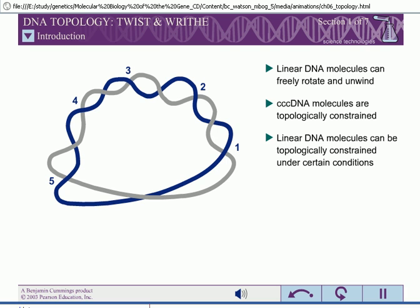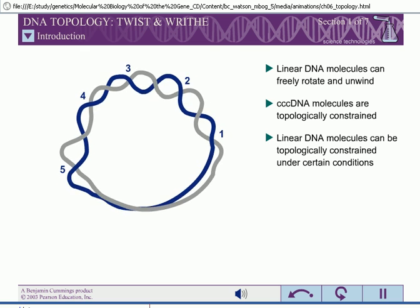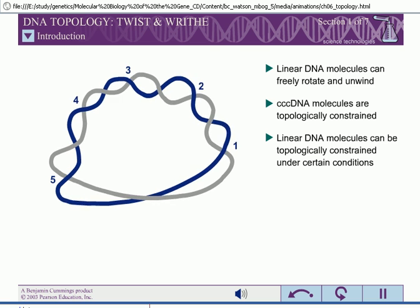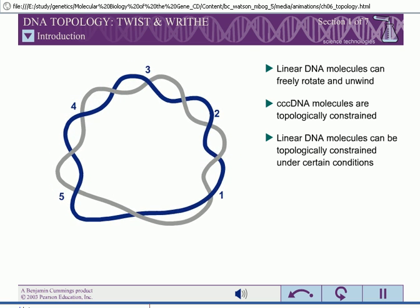Since each of the two strands of CCC DNA are covalently linked circular chains, and because they coil around one another, the strands cannot be separated from each other without breaking a covalent bond and opening the circle of one of the strands.